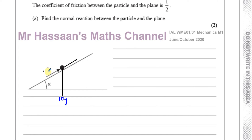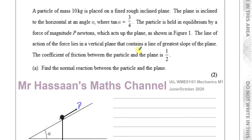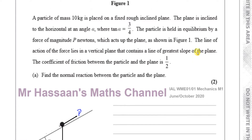The same P that was acting on that side, I'm going to draw on this side — I just prefer to draw it this way. So I'll draw the P over here instead of where it was before. It's acting in the same direction, the same magnitude, no problem. It says the particle is held in equilibrium by a force of magnitude P newtons, which acts up the plane. The line of action of the force lies in a vertical plane that contains a line of greater slope.